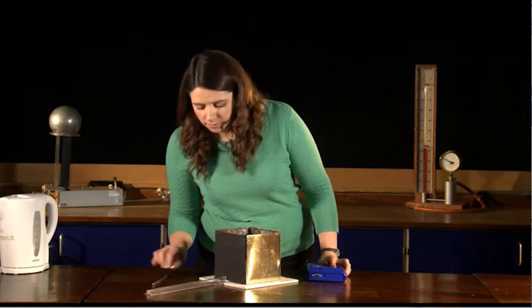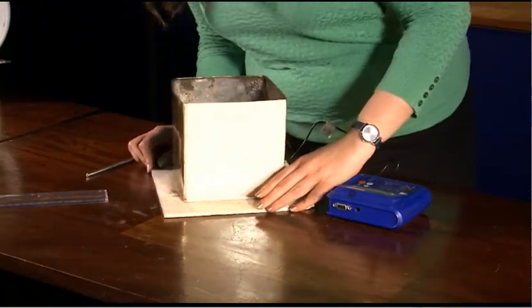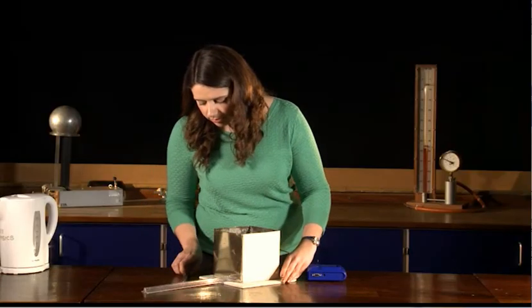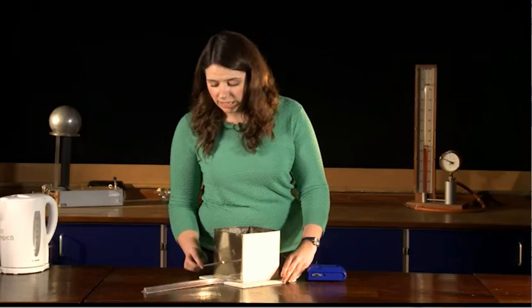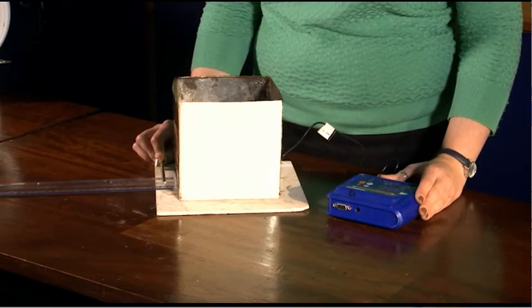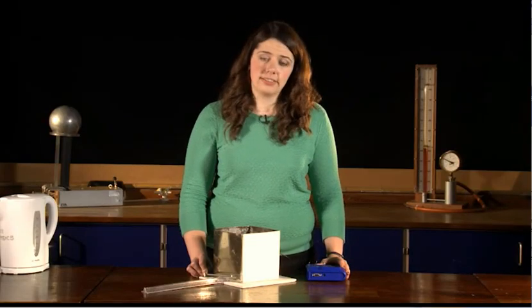If I spin my box around to the next side, this is the copper side. And I repeat the same thing so I'm looking at one centimeter away. I'm letting it stabilize a little bit. And I can see that the reading says 30.4 degrees Celsius.